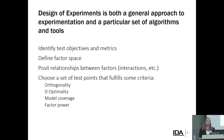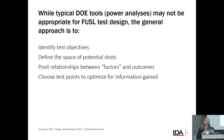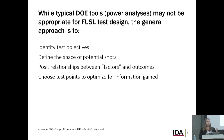Design of experiments can be both a general approach to planning tests and also a particular set of tools. The general approach has four major steps: identifying the test objectives and metrics, defining the factor space, positing a relationship between those factors, and then choosing a set of test points that fulfills some type of criteria. In our particular application, we're going to use that same general approach, but we aren't going to use the typical tools like a power analysis, because the complexity of the environment would result in far more tests than we could actually conduct.